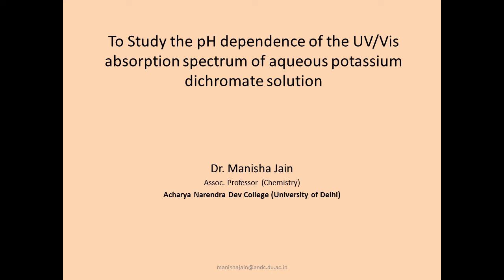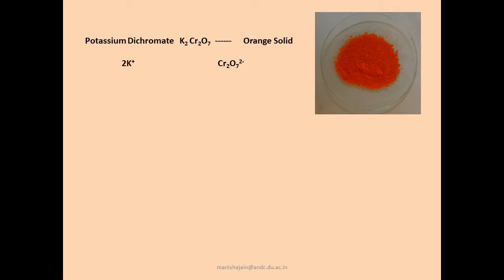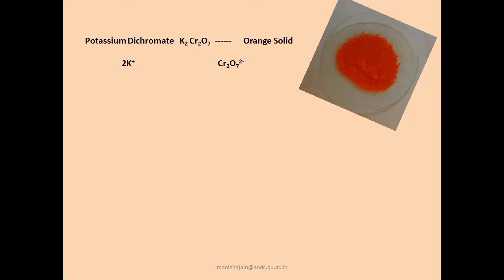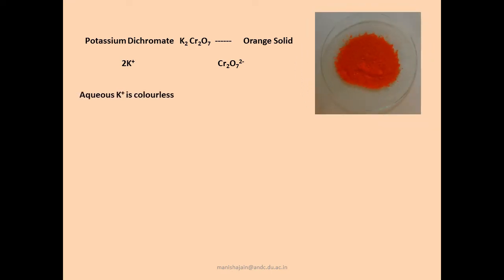We all have seen how potassium dichromate looks — it's a bright orange solid. Let us split potassium dichromate into two parts: the cationic part and the anionic part. The cationic part is the potassium ion and the anionic part is the dichromate ion. Which one do you think is responsible for the color — is it the cation or the anion?